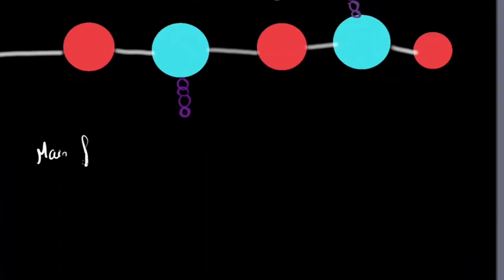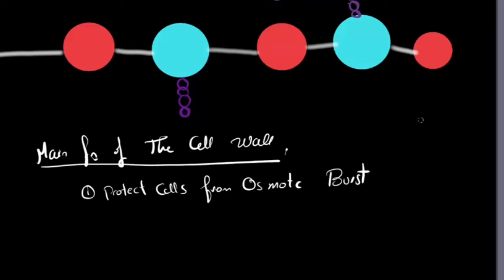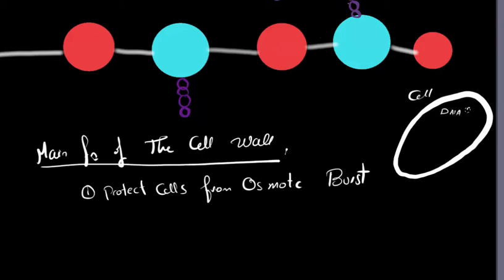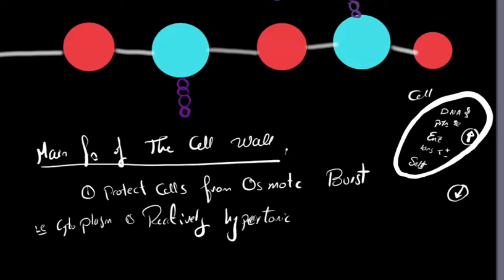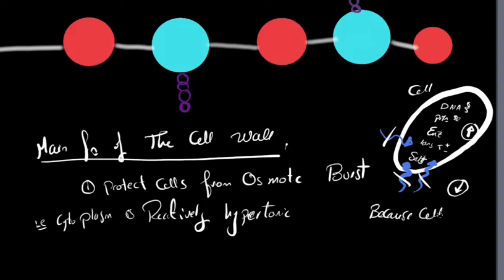The main function of the cell wall is to protect the cell from osmotic bursts. Inside the cell, the cytoplasm contains DNA, proteins, enzymes, ions, and salts, which causes high osmotic pressure inside the cell and relatively low osmotic pressure outside. The cell wall protects the cell from bursting — even though the osmotic pressure inside can be up to two atmospheres, about the pressure inside a car tire — by acting as a steel network.